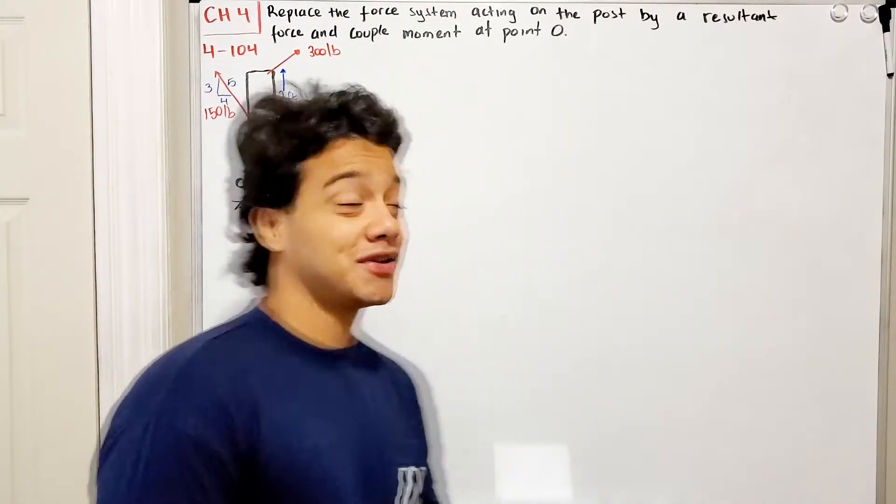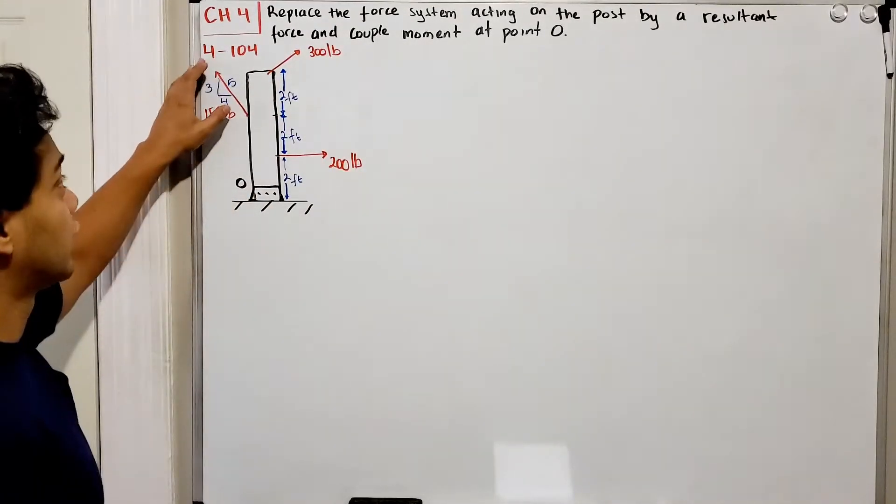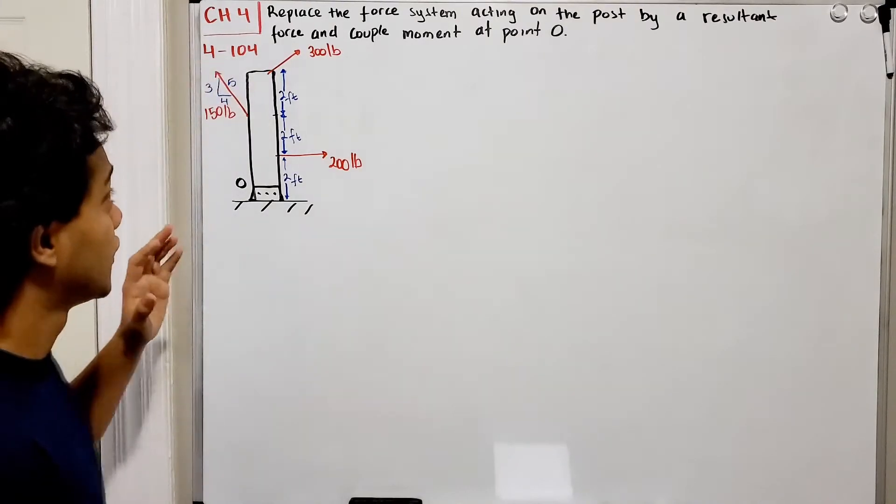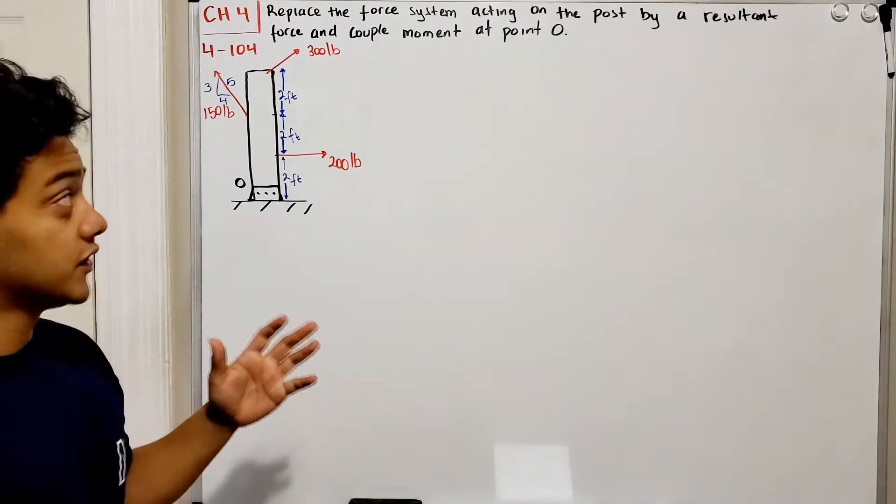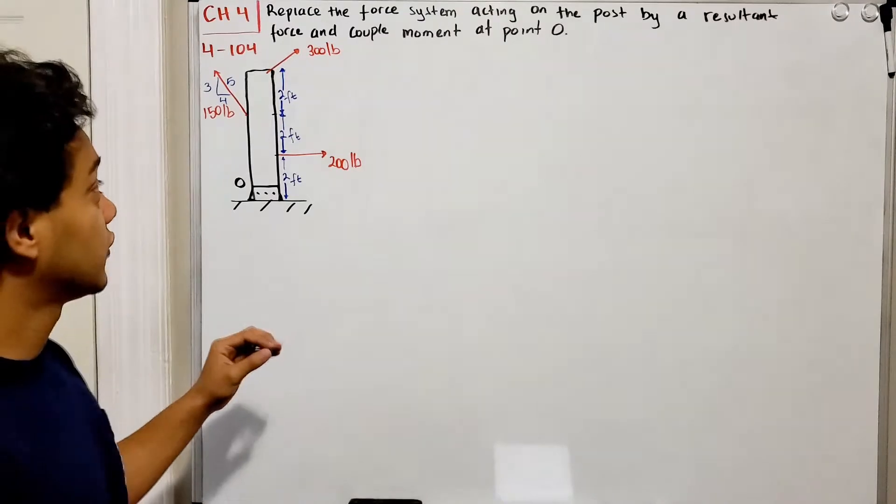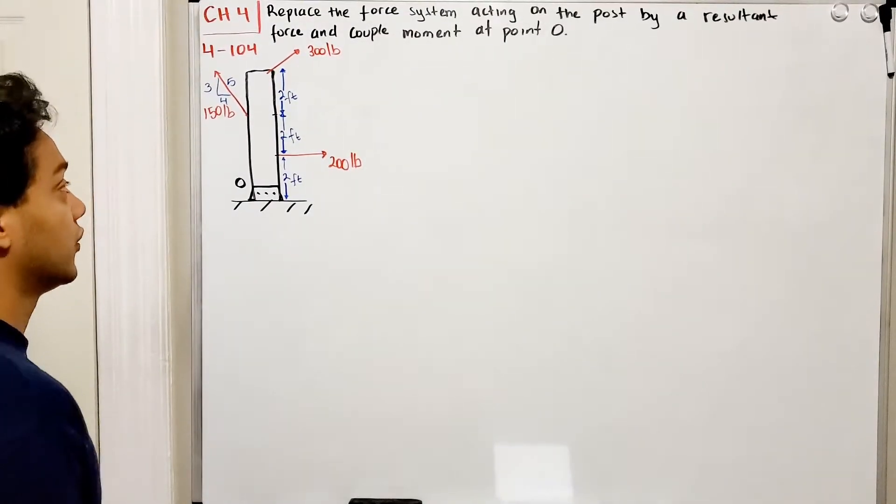Welcome back everyone to Learning by Teaching. We're in statics and we're going to do problem 4.104. It says replace the force system acting on the post by a resultant force and couple moment at point O.